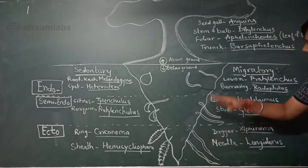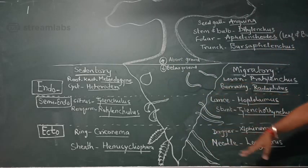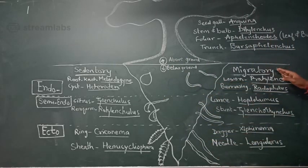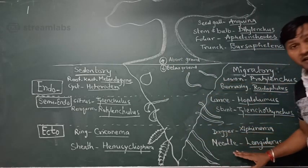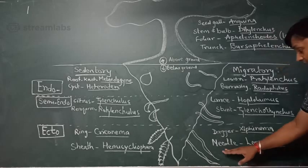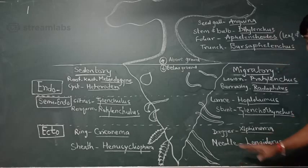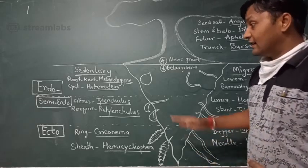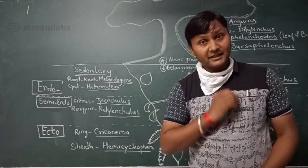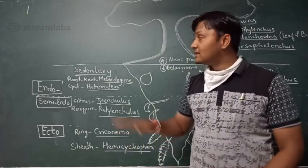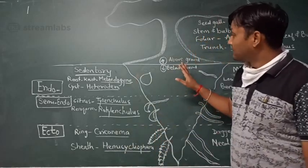Under migratory ectoparasitic nematodes, examples include dagger nematodes and Xiphinema — collectively called Dorylaimid nematodes — as well as needle nematodes. These are classified as migratory ectoparasitic nematodes.